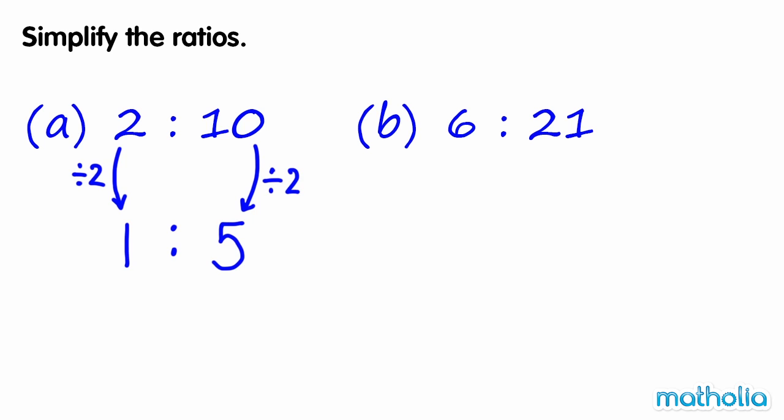B. Both parts are divisible by 3. 6 to 21 is equal to 2 to 7.